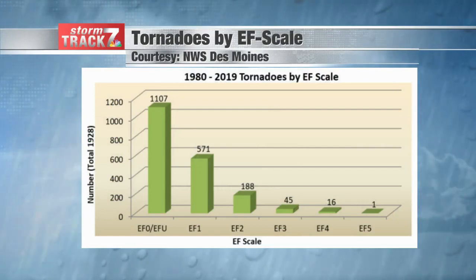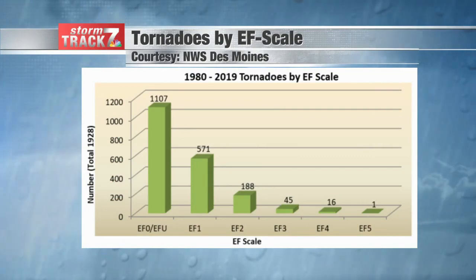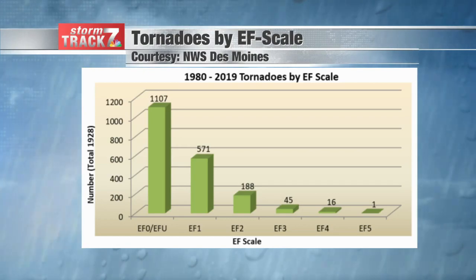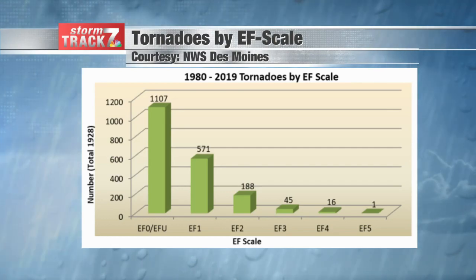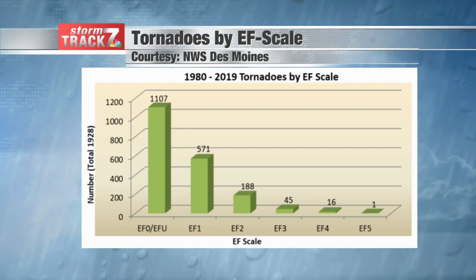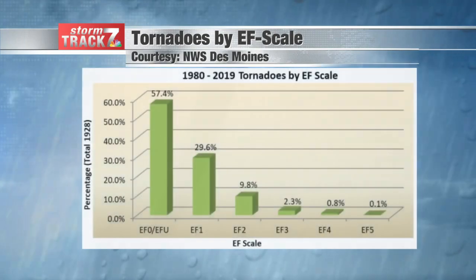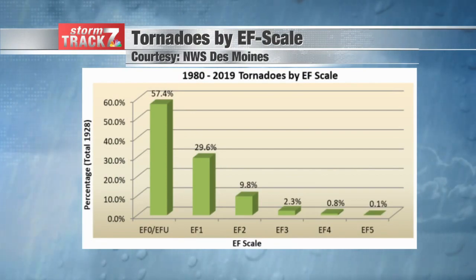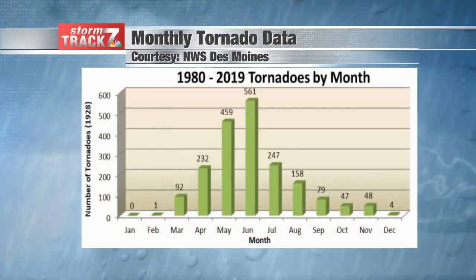Let's go into some climatology and history behind Iowa tornadoes, classified by EF scale, courtesy of the National Weather Service in Des Moines. Weaker tornadoes — EF0, EF1, and EFU (unrated) — make up most tornadoes we see throughout the state of Iowa. Stronger tornadoes, say EF2 and above, are not as common, which is expected. Almost 60% of tornadoes in Iowa, from the period between 1980 and 2019, were EF0 or EF1 rated.